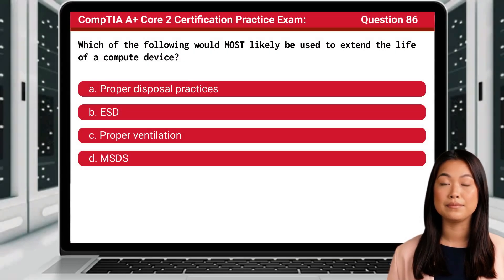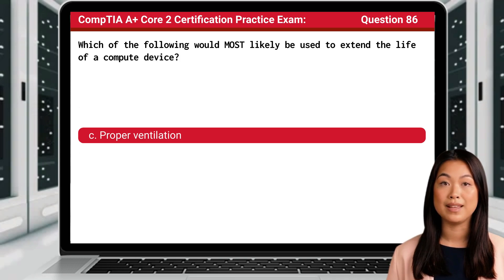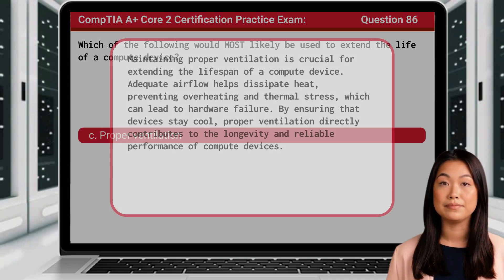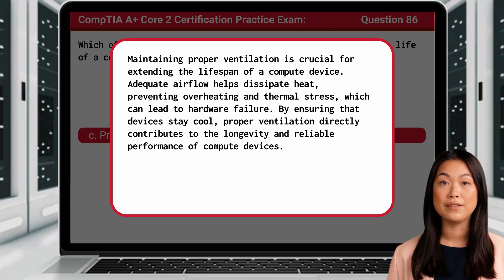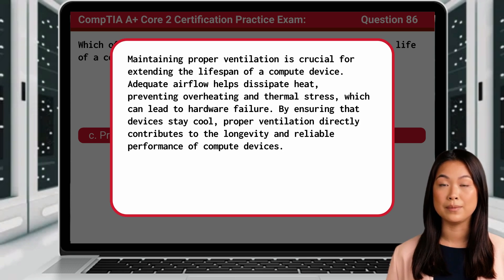Question 86: Which of the following would most likely be used to extend the life of a compute device? The answer is C, proper ventilation. Maintaining proper ventilation is crucial for extending the lifespan of a compute device. Adequate airflow helps dissipate heat, preventing overheating and thermal stress, which can lead to hardware failure. By ensuring that devices stay cool, proper ventilation directly contributes to the longevity and reliable performance of compute devices.